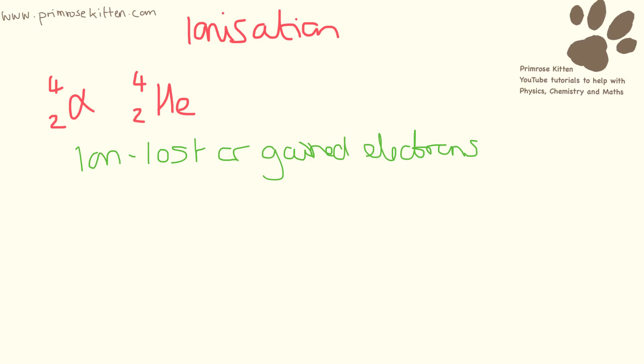And an alpha particle is just helium that has lost all of its electrons. So helium normally has two electrons around it like this, with two protons and two neutrons in the middle. This does not happen with an alpha particle. It is just the nuclei, just the bit in the middle. So we say it's really ionizing because it's an ion that does something.